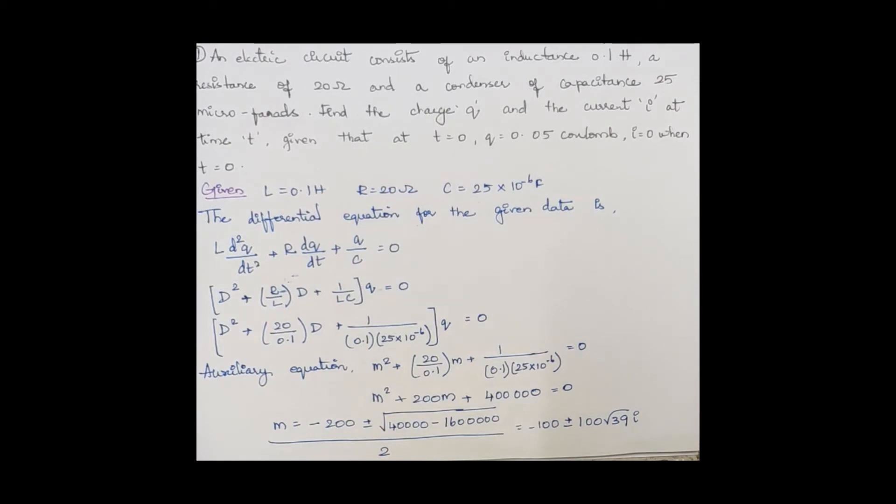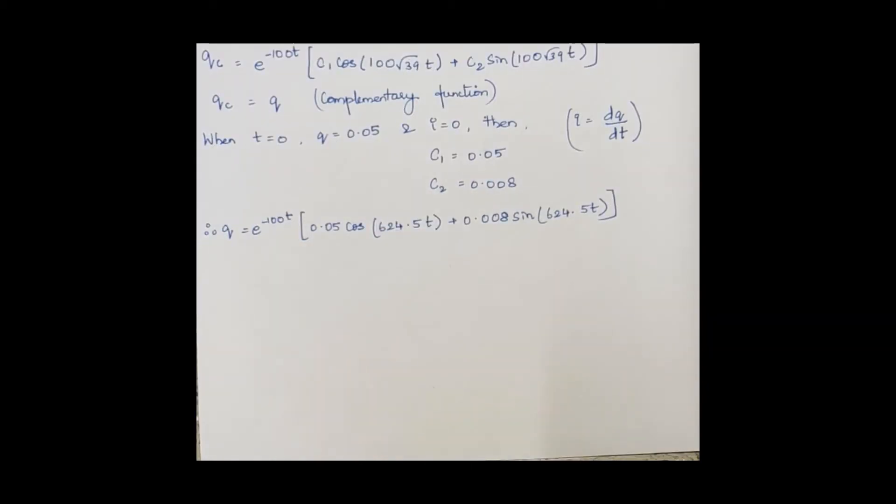The roots turn out to be -100 ± 100√39i, which is an imaginary root. So on substituting those values, the complementary function q_c is given by this. And they have given us some initial conditions: t = 0, q = 0.05, and i = 0.